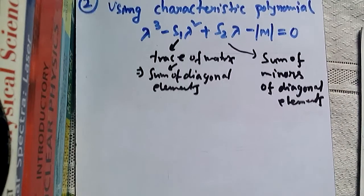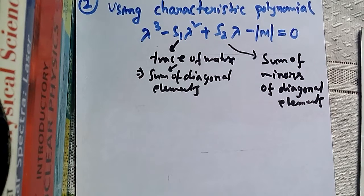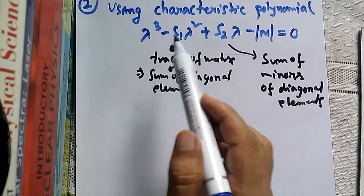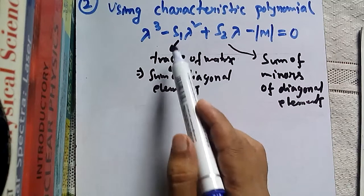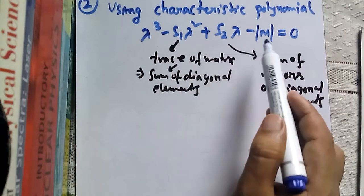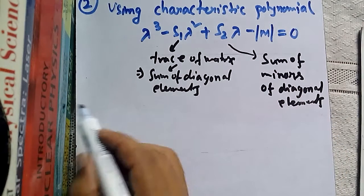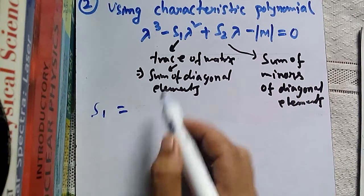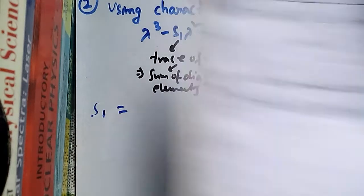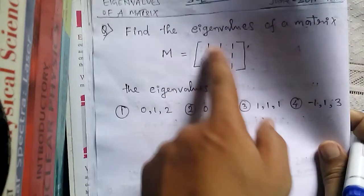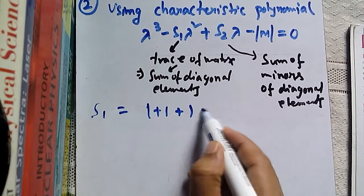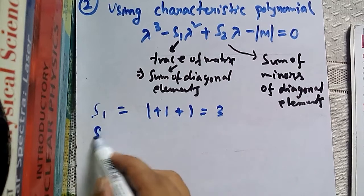From this problem we need to find three ingredients: S1, S2, and the determinant of the matrix. S1 is the sum of diagonal elements. The diagonal elements are 1, 1, and 1, so S1 equals 1 plus 1 plus 1, which is 3.